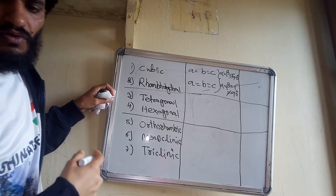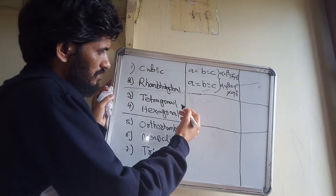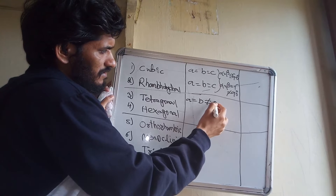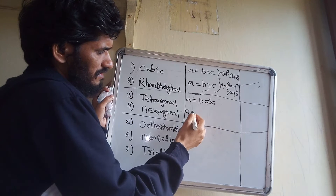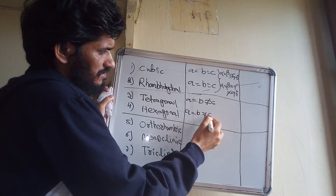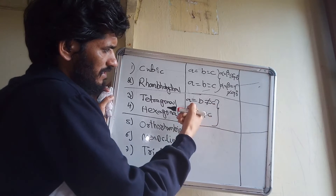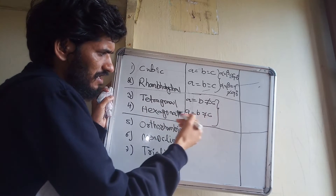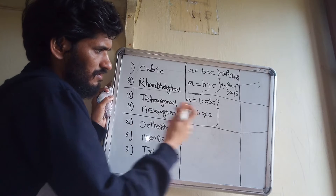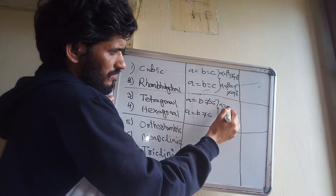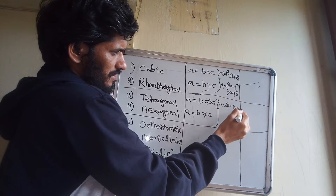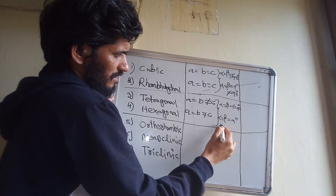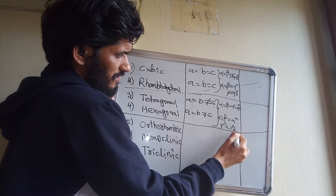For tetragonal, a = b but c is not equal to a and b. The angles are alpha = beta = gamma = 90°. For hexagonal, a = b but c is not equal to a and b; the angles are alpha = beta = 90°, but gamma = 120°, not 90°.